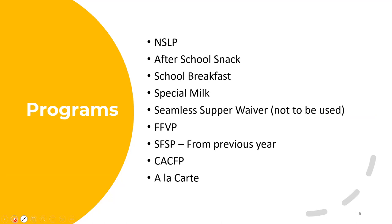These are all the child nutrition programs listed in the worksheet. The programs that you're participating in are the ones you'll be reporting on. Note that SFSP reporting is from the previous school year, so keep that in mind. The summer seamless supper waiver — we are not using it at this time, but it is listed on the spreadsheet.